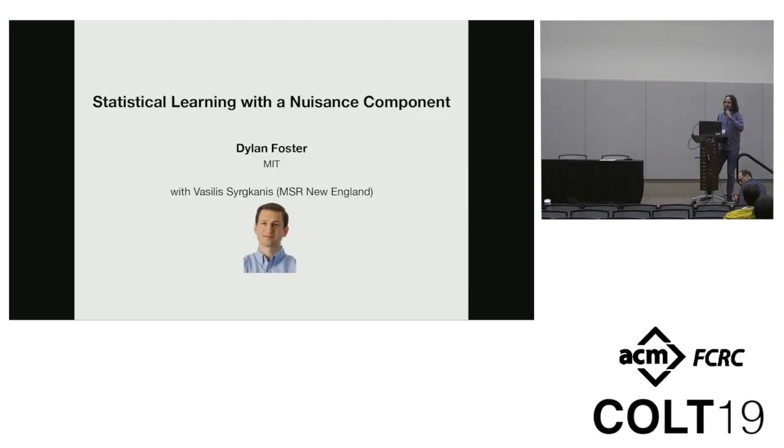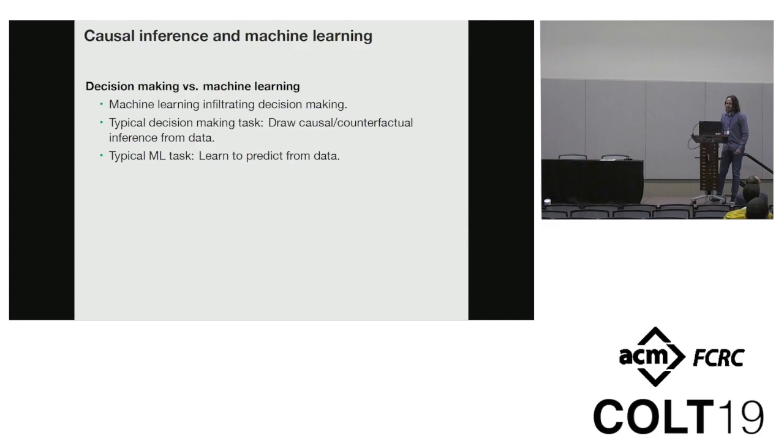All right. Thanks. Yeah, so this is about statistical learning with a nuisance component. Our problem is motivated by the fact that in the last few years, machine learning has come to play a larger role in decision-making problems. These are two different types of problems that have different goals.